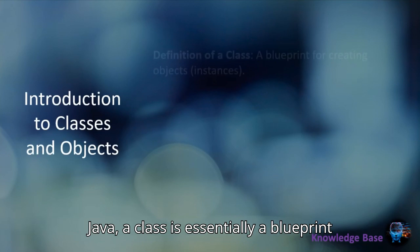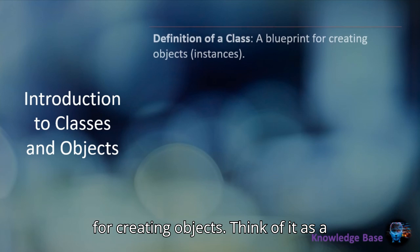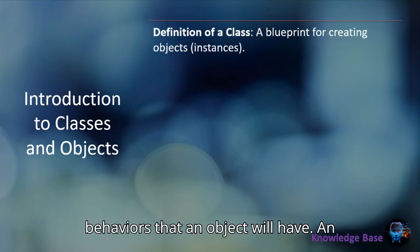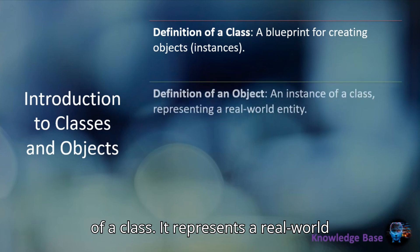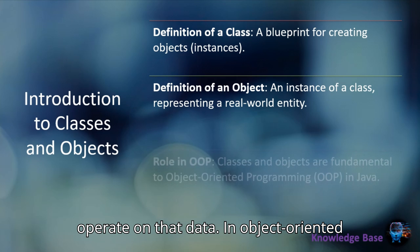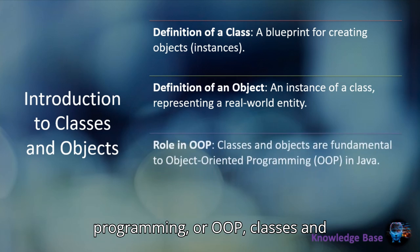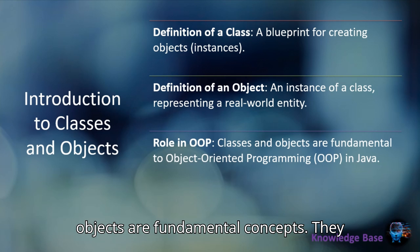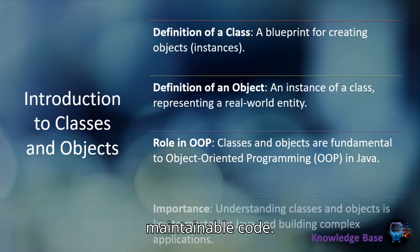Let's begin by understanding what classes and objects are. In Java, a class is essentially a blueprint for creating objects. Think of it as a template that defines the properties and behaviors that an object will have. An object, on the other hand, is an instance of a class. It represents a real-world entity that contains both data (attributes) and methods (functions) that operate on that data. In object-oriented programming, or OOP, classes and objects are fundamental concepts. They allow us to create modular, reusable, and maintainable code.